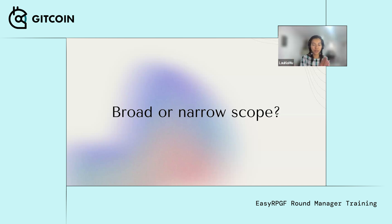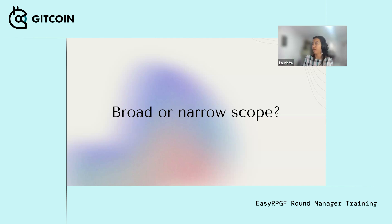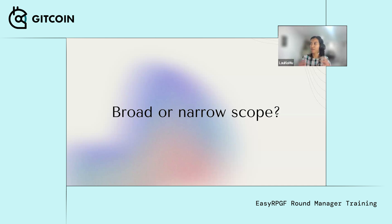This makes it really taxing in terms of participation. And when it becomes taxing, it can also impact the way in which the distribution is taking place and how people are able to evaluate the projects participating in the round. So it can become very overwhelming for everyone involved, even if you're providing clear definitions.